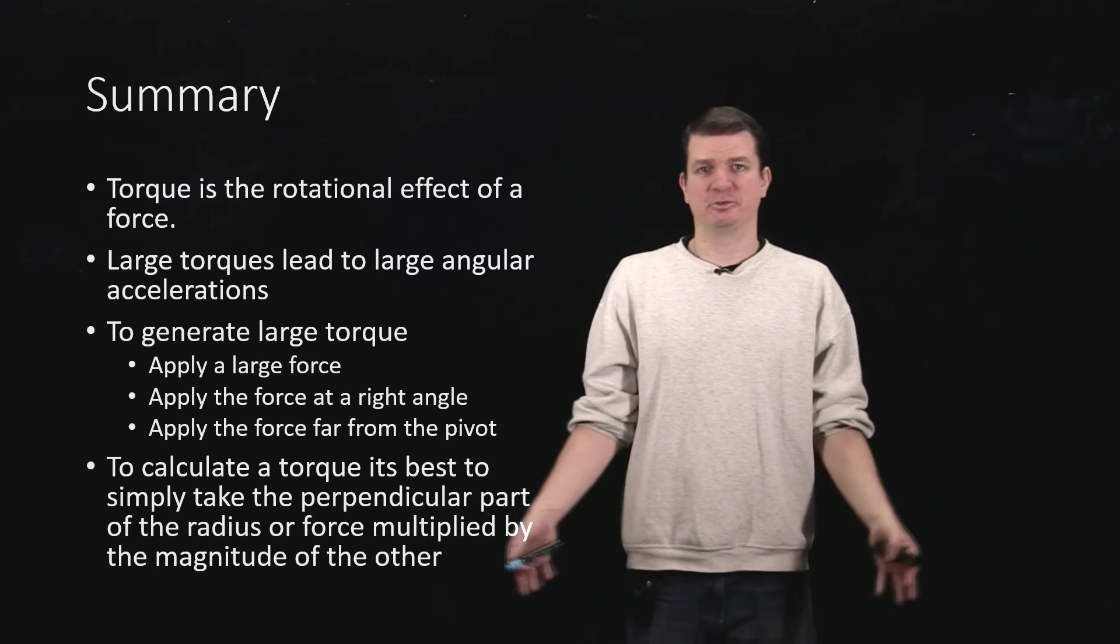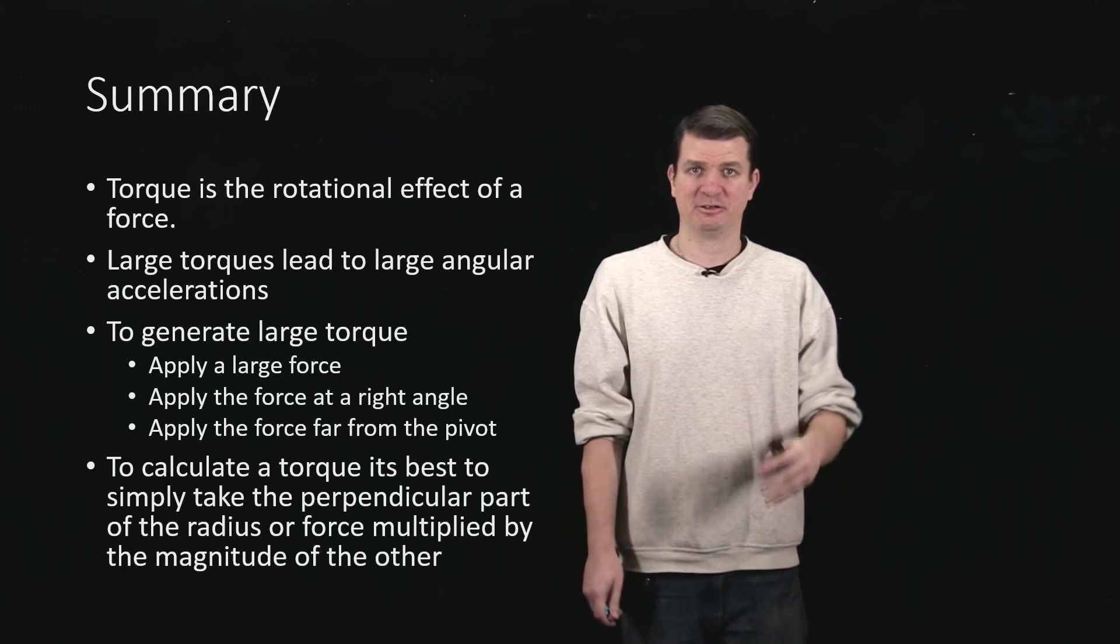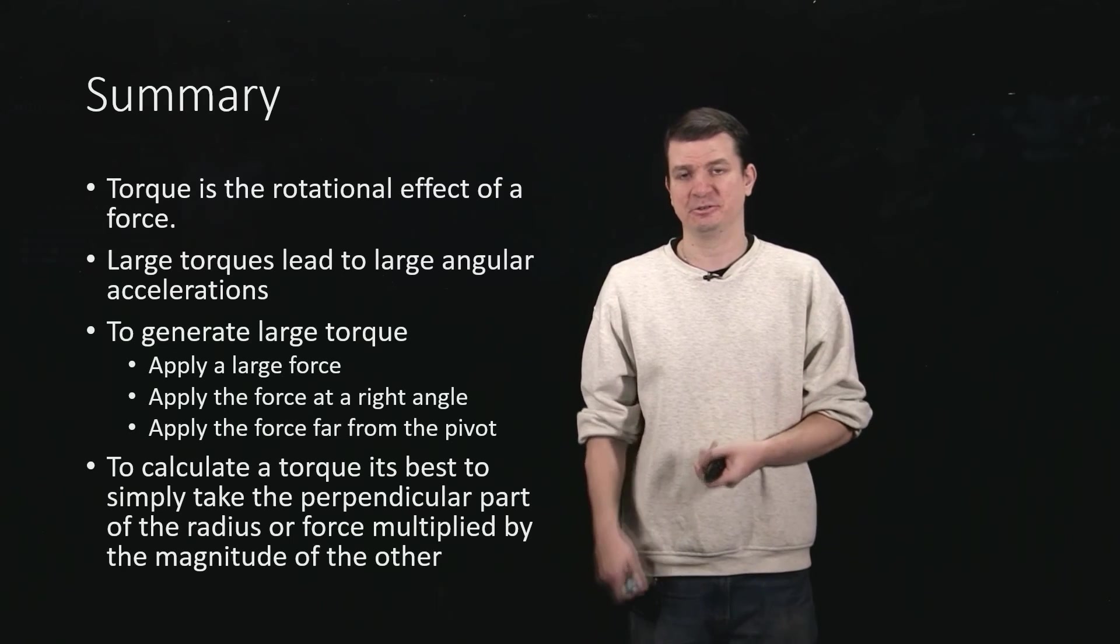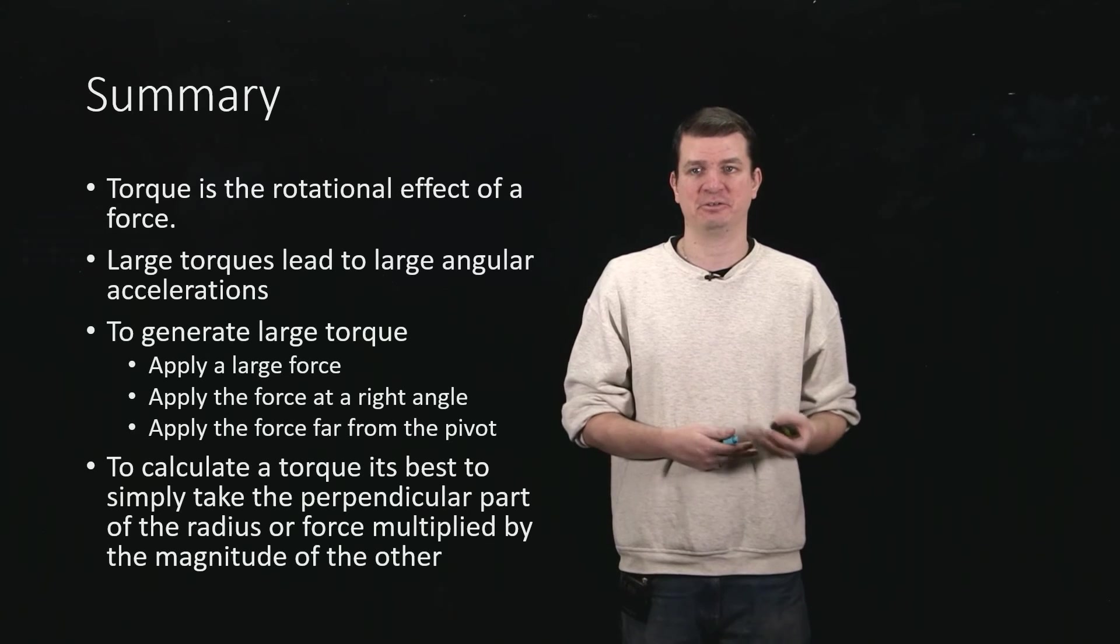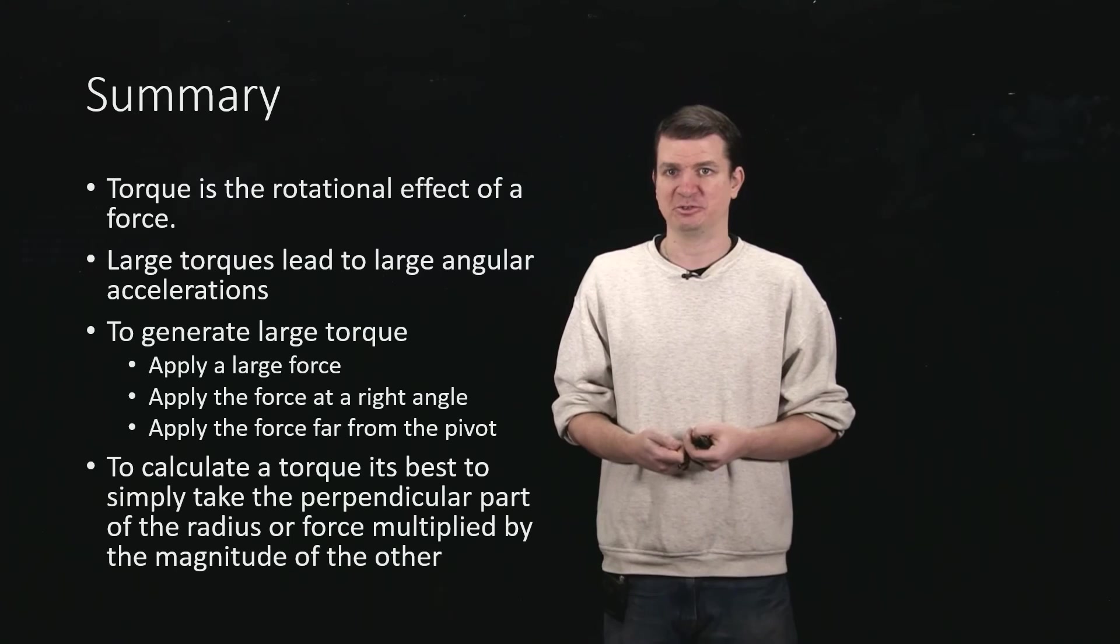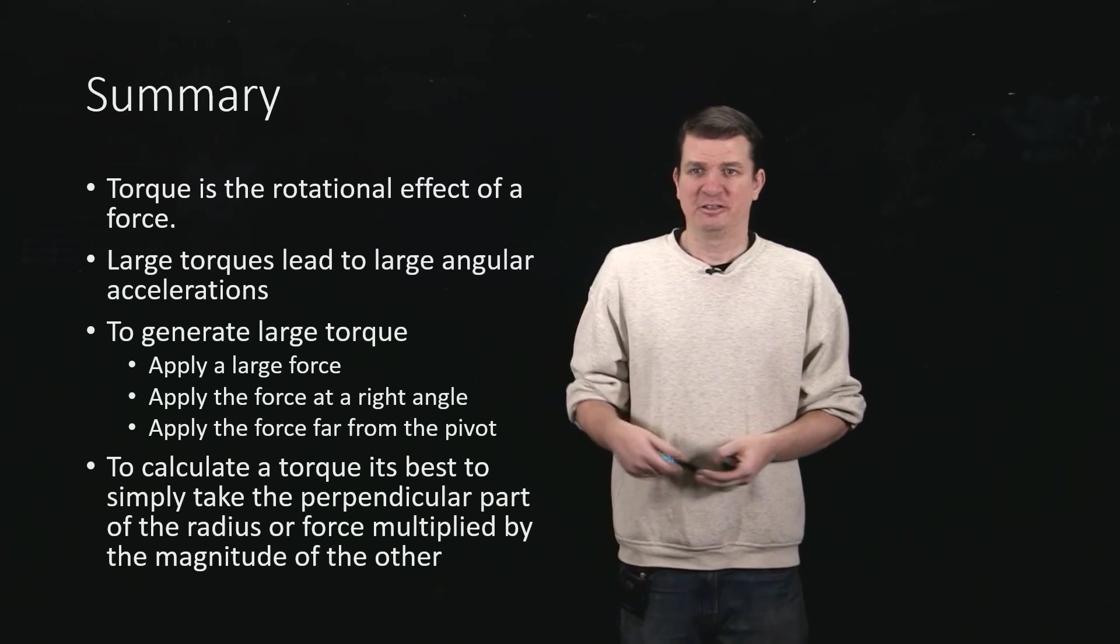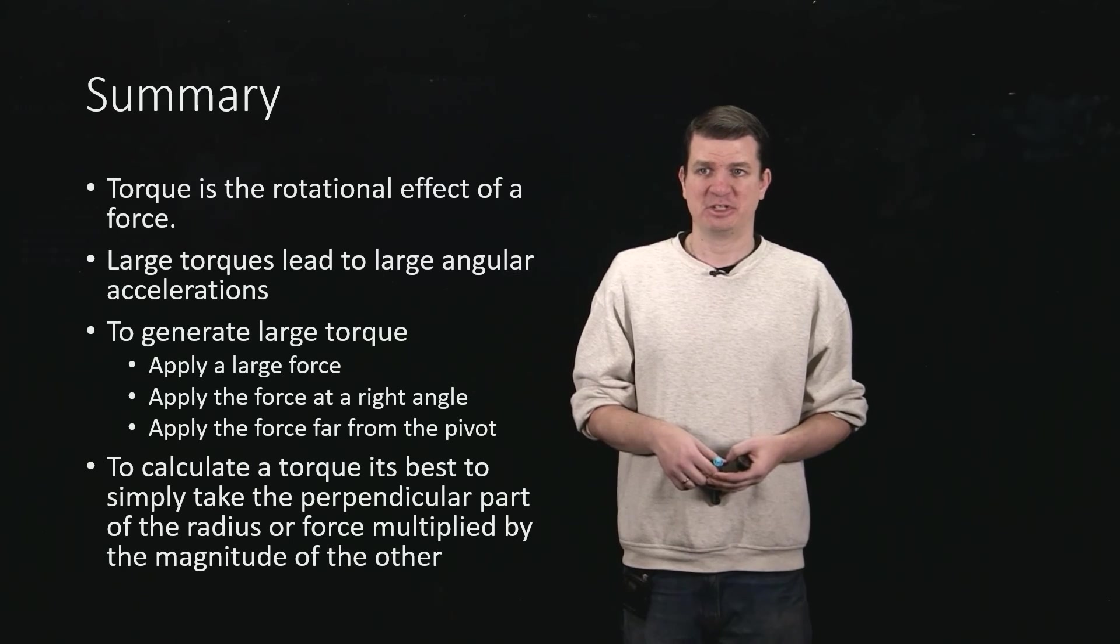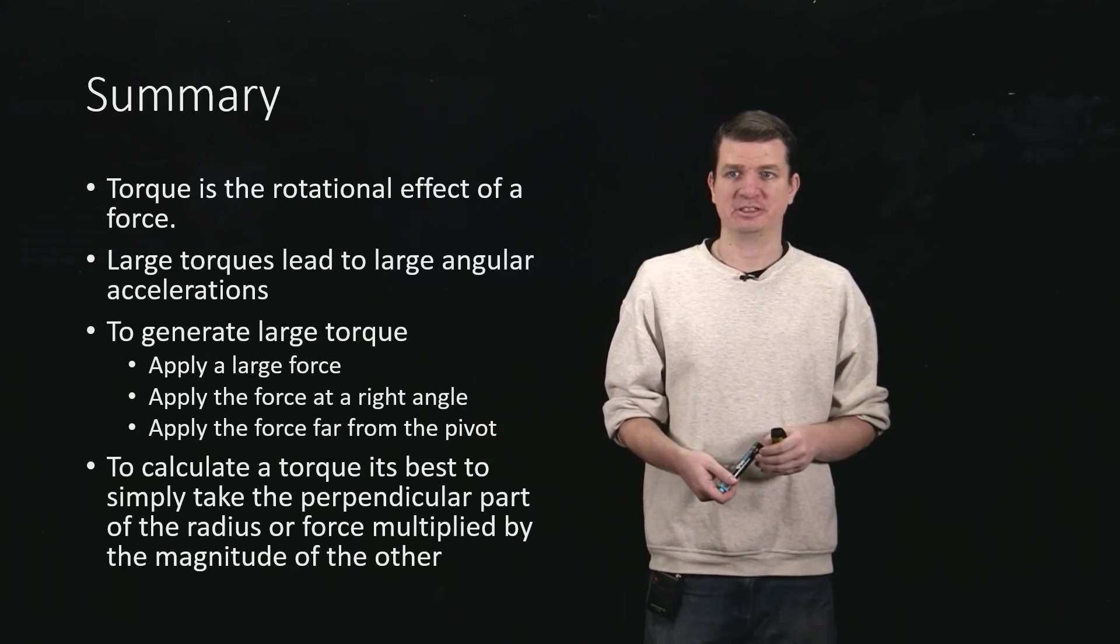Okay, so in summary we've seen that torque, of course, is the rotational effect of a force, because r cross F, and it then turns into talking about how much angular acceleration you're actually able to generate as a result of applying that force in whatever manner you've chosen to apply it at whatever location you're applying it. So what we meant by saying it's a rotational effect is, of course, the fact that a larger torque gives you a larger angular acceleration.